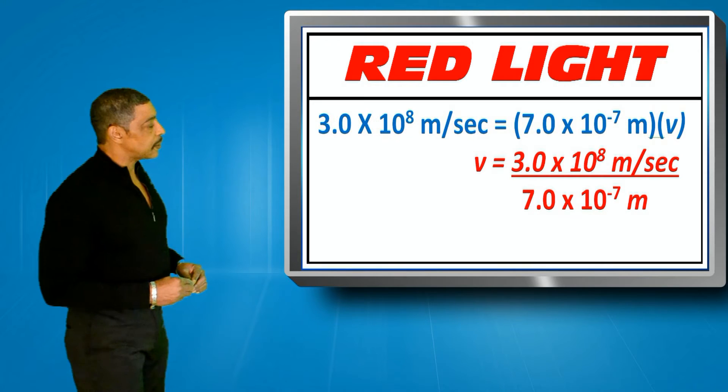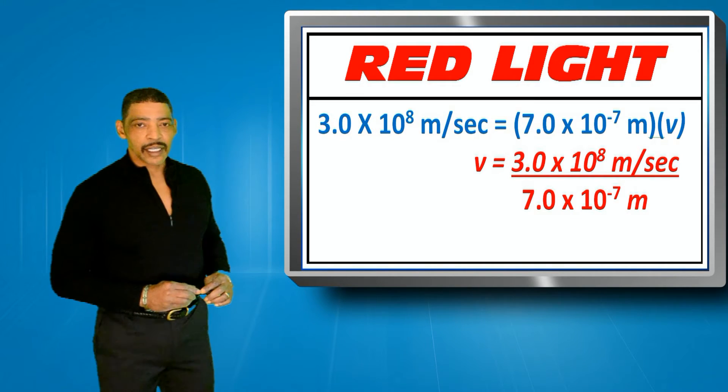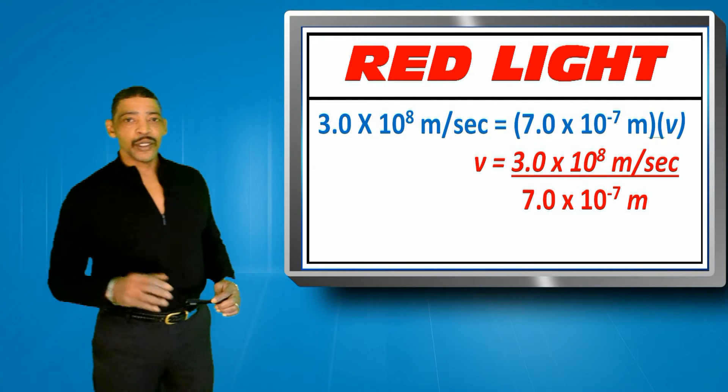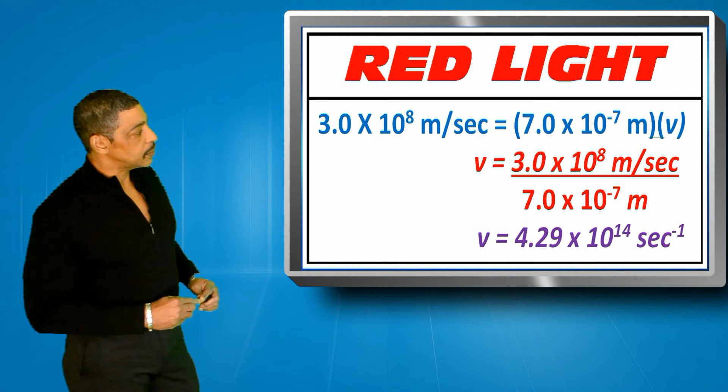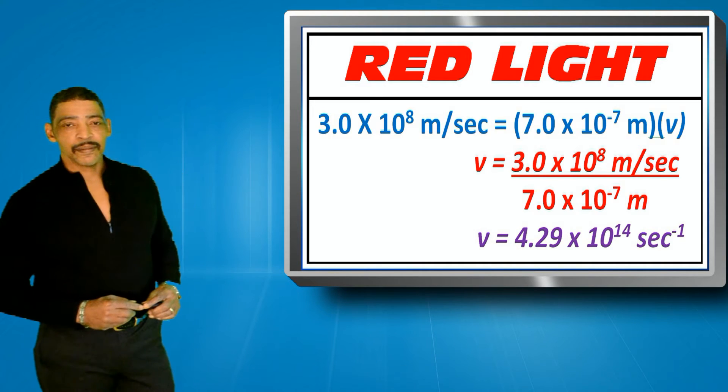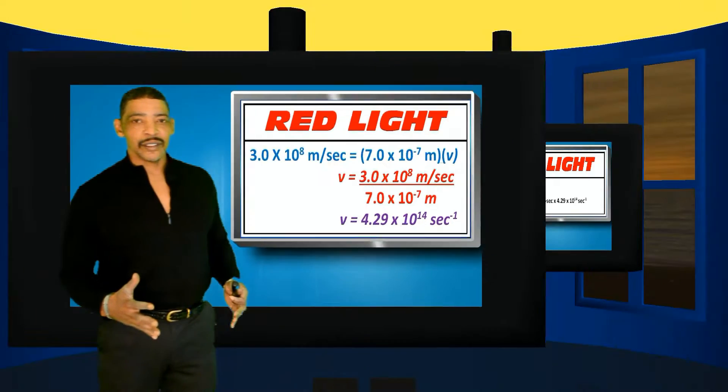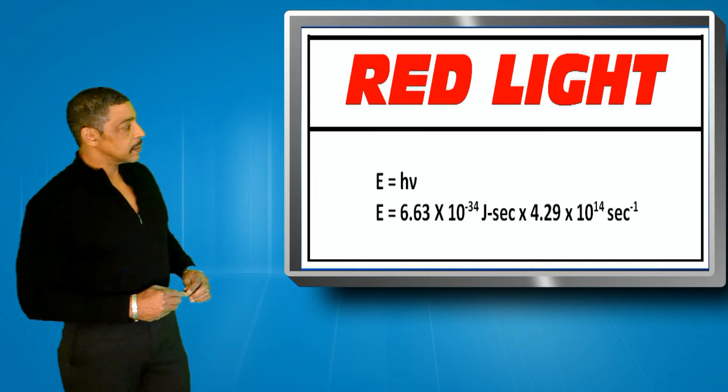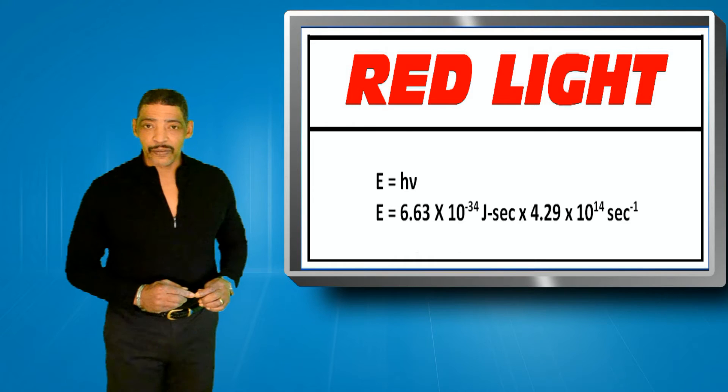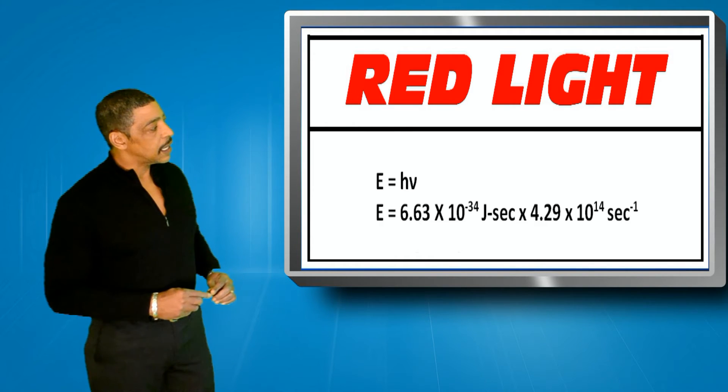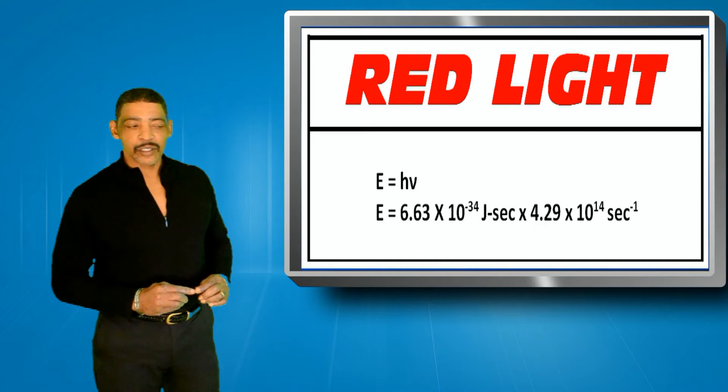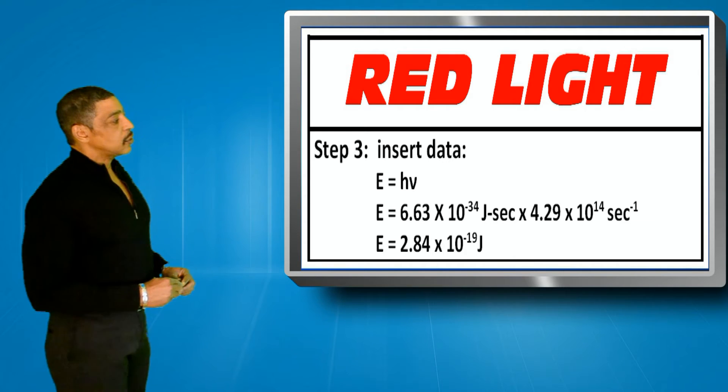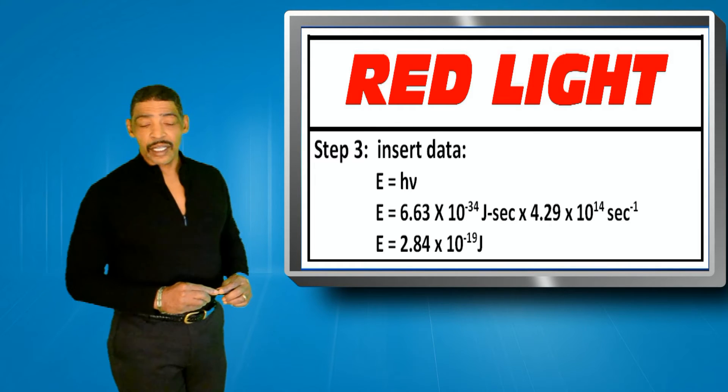Rearranging the equation generates the following, where nu is equal to 3.0 times 10 to the 8 meters per second divided by 7.0 times 10 to the minus 7 meters. And the frequency will be 4.0 times 10 to the 14 reciprocal seconds. Now we may insert this frequency into Planck's equation, where the energy of a photon of red light is equal to Planck's constant 6.63 times 10 to the negative 34 joules times seconds times 4.29 times 10 to the 14 reciprocal seconds. And the energy of a photon of red light will be 2.84 times 10 to the minus 19 joules.